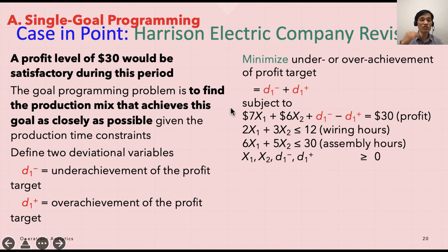The second and third constraints remain the same: 2X1 + 3X2 ≤ 12 and 6X1 + 5X2 ≤ 30. All variables — X1, X2, D1-minus, and D1-plus — assume non-negativity. Using this setup, you can run goal programming and see what happens.